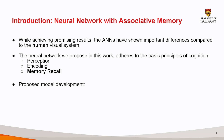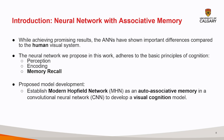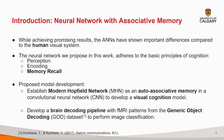First, we established a modern Hopfield network as an associative memory in a convolutional neural network to develop a visual cognition model. Second, we applied this framework to develop a brain decoding pipeline from fMRI signal patterns using the generic object decoding dataset. In short, what we're aiming to do is develop a robust neural network that captures high-level cognitive functions, which can be an ideal model for simulating dementia through injury mechanisms.